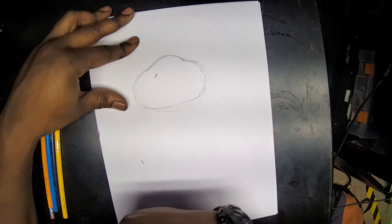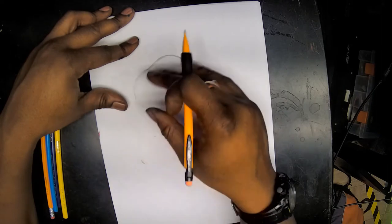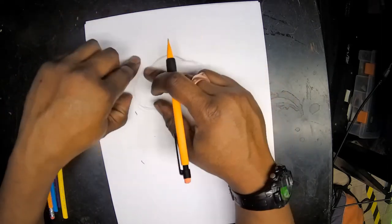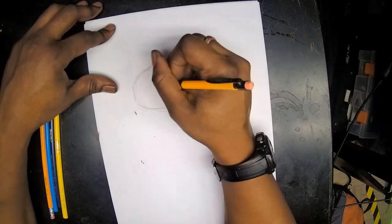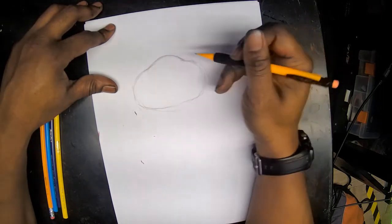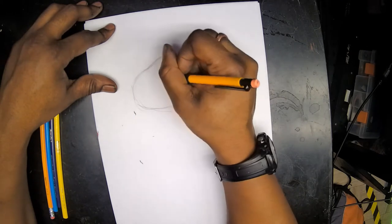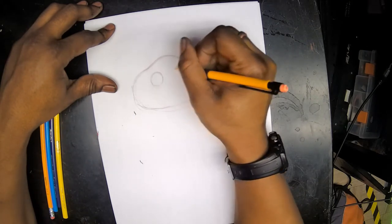This overall shape is going to be the shape for 22's head. Now under our art shape is where we're going to build our face. The first thing we're going to do is put a couple circles for eyes.